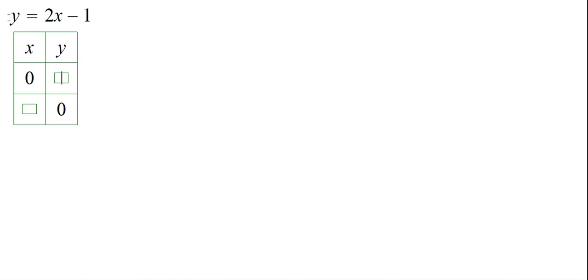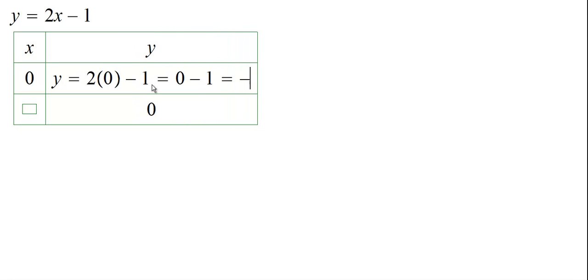Notice that here we have the x value equal to 0, and we have to find the y value. What we will do is simply substitute 0 for x, and that gives me what for the y value? 2 times 0 minus 1, that is 0 minus 1, which equals negative 1.